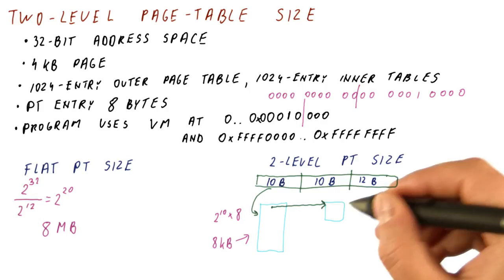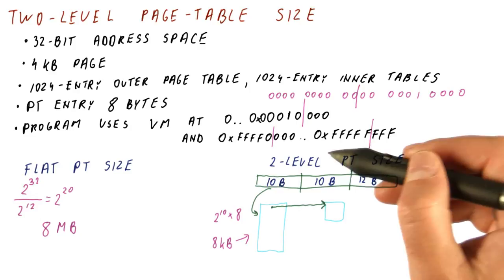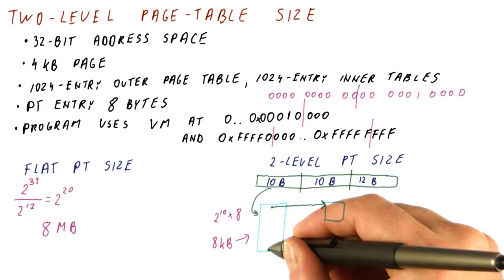For this address range, the page number goes from FFFF zero to FFFF. These page numbers also have the same outer page number. It's all ones. So only the last outer page table entry needs to point to an actual inner page table.